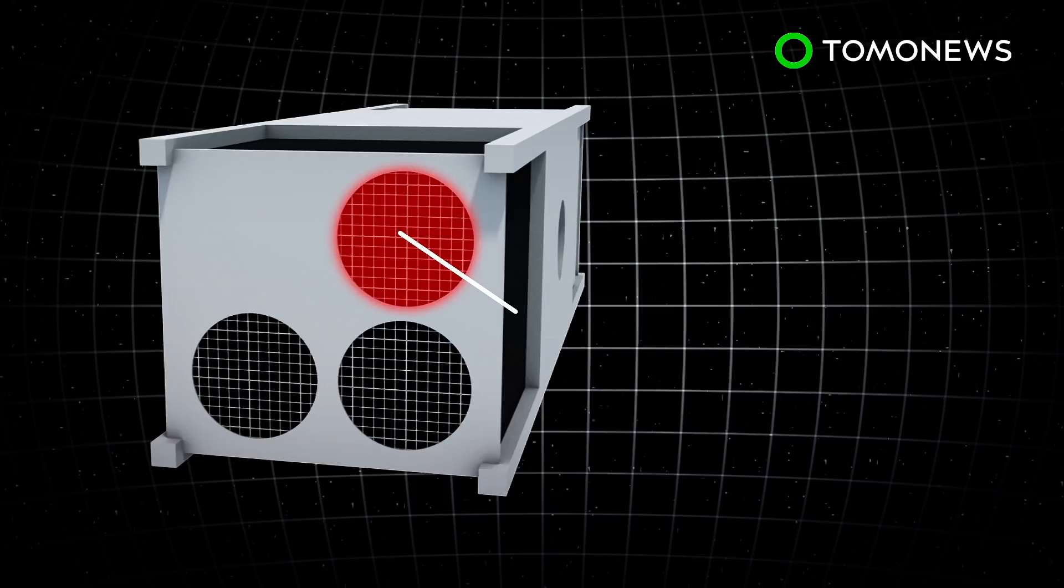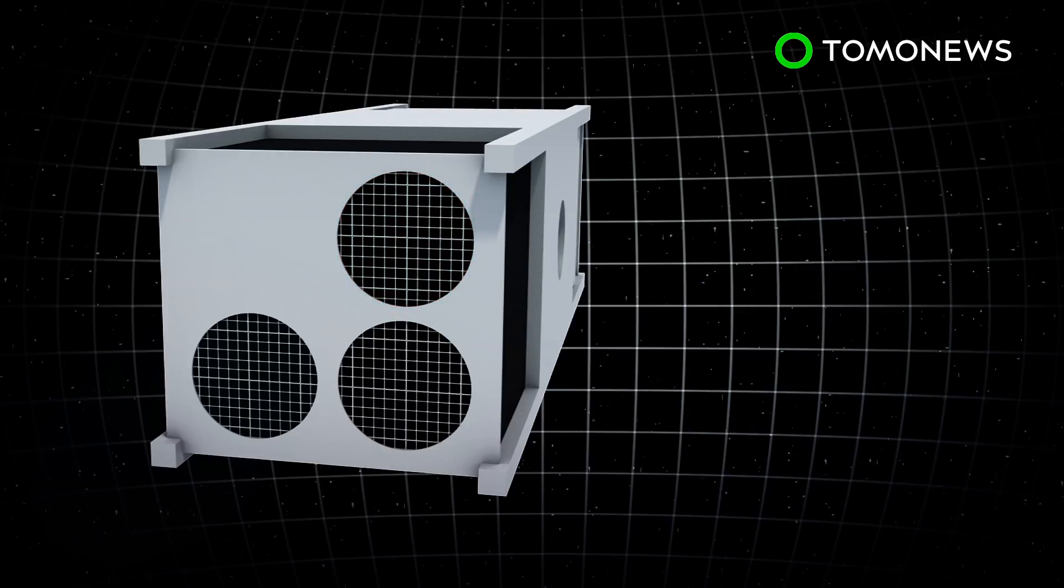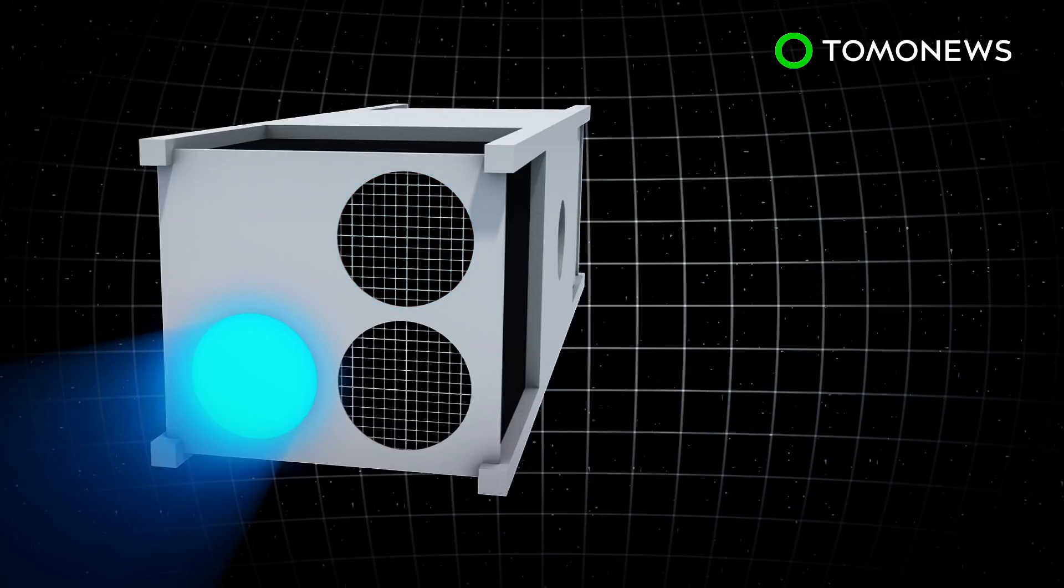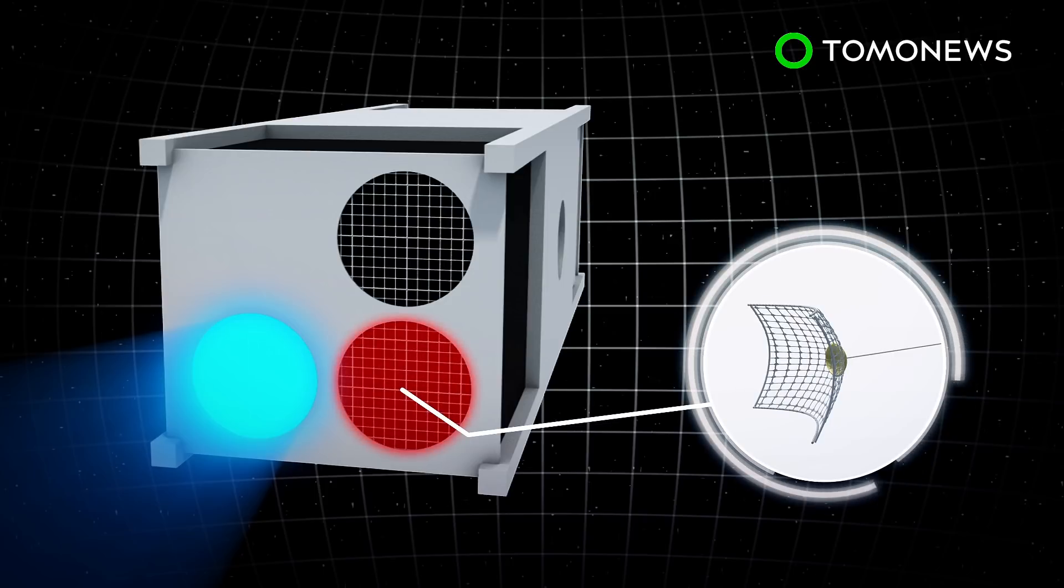The first CubeSat units will contain GPS, data storage and communication systems, while the second will consist of a propulsion system. The third unit would contain nets and tethers, which would be used to capture the space debris.